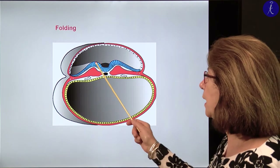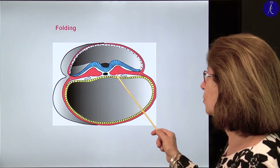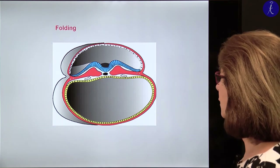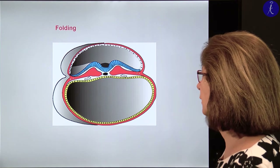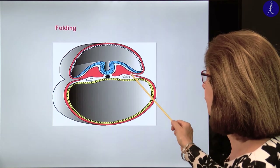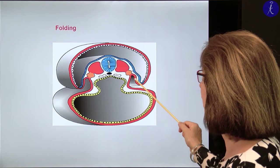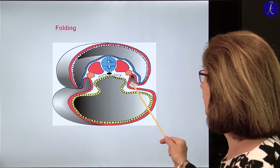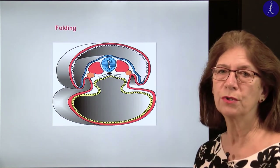As the neural plate thickens and elevates, the paraxial mesoderm will also thicken. In the lateral plate mesoderm, holes will appear. As the folding proceeds, these holes will fuse and form a cavity — this will be the intraembryonic coelom. Initially this intraembryonic coelom is widely connected to the extraembryonic coelom, so the two are not yet separated from each other.